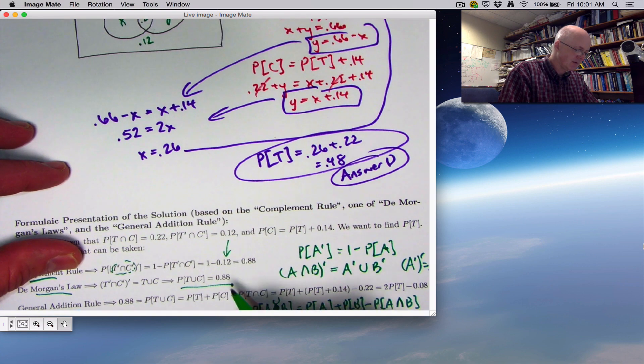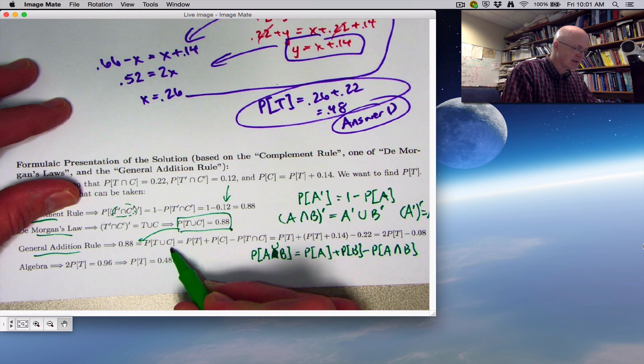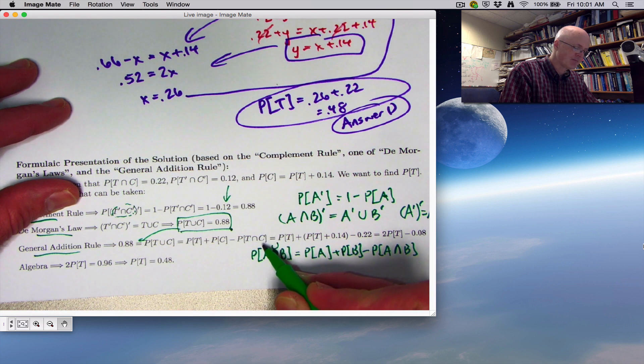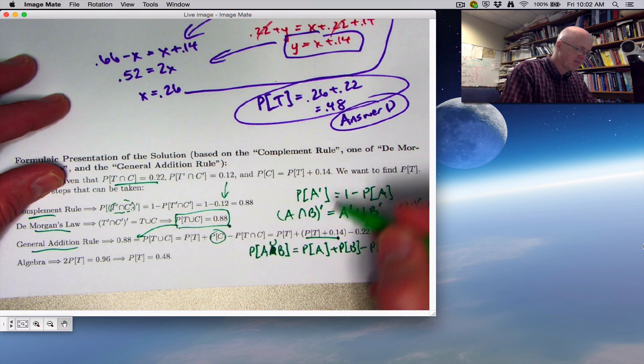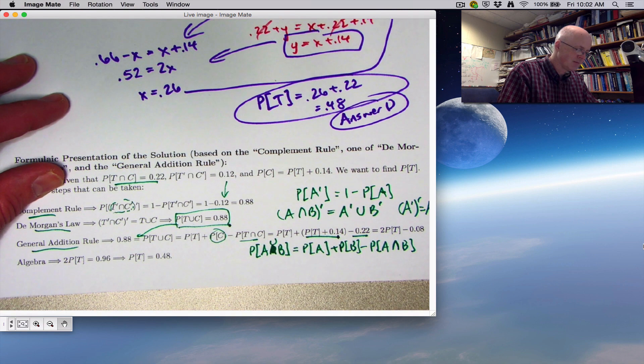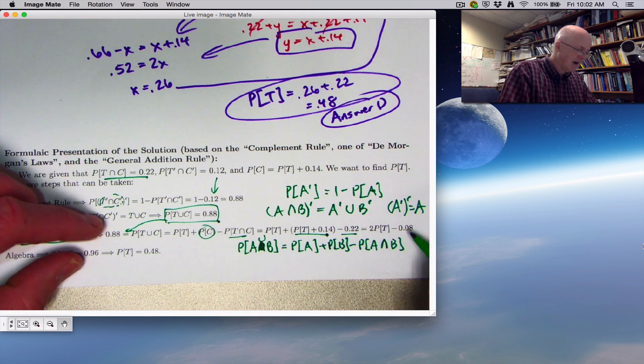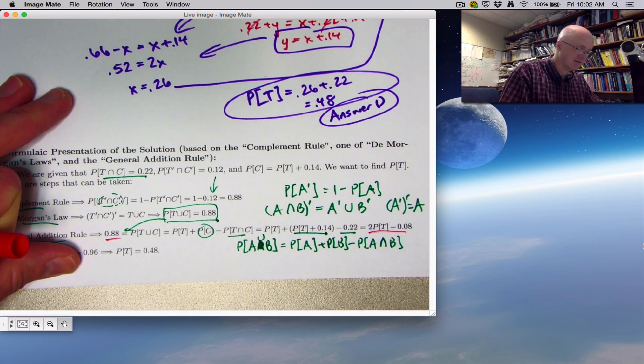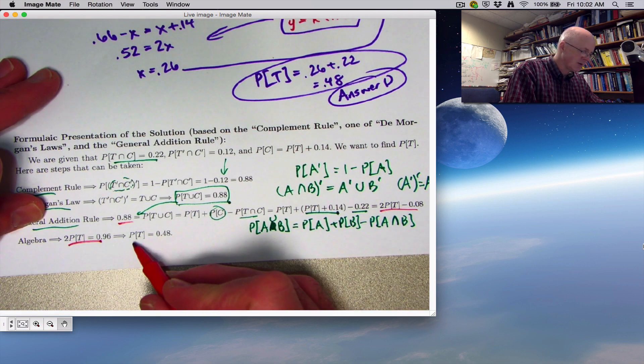Applying that here, we can say the probability of T union C is the probability of T plus the probability of C minus the probability of T and C. Then using the fact that the probability of C can be replaced by this and the probability of T and C is 0.22, simplifying using algebra this becomes 2 P of T minus 0.08. Solving for P of T gives 0.48, the final answer.